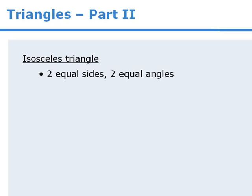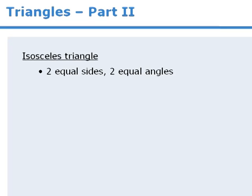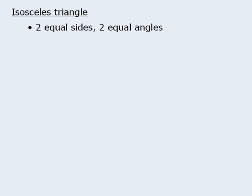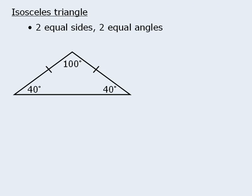The first triangle we will examine is an isosceles triangle, which has two equal angles and two equal sides. Here is an example of an isosceles triangle.